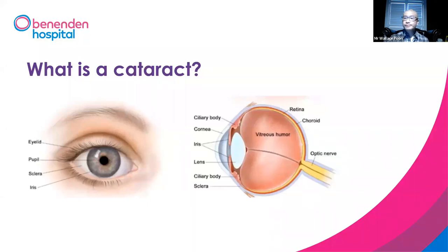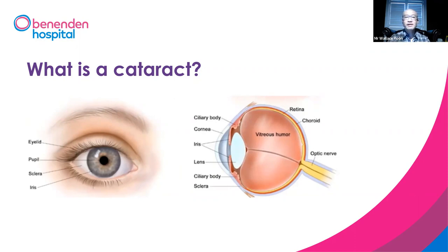So what is the cataract? On the slide you can see two diagrams. The right is the frontal view of the eye. The left is the cross section of the eyeball — that means you cut it in half. This is the front part of the eye, this is the back of the eye. The iris determines the colour of the eye. You can see the pupil right in the middle. The lens sits behind the pupil, and the retina itself and the optic nerve, which takes the information to the brain.